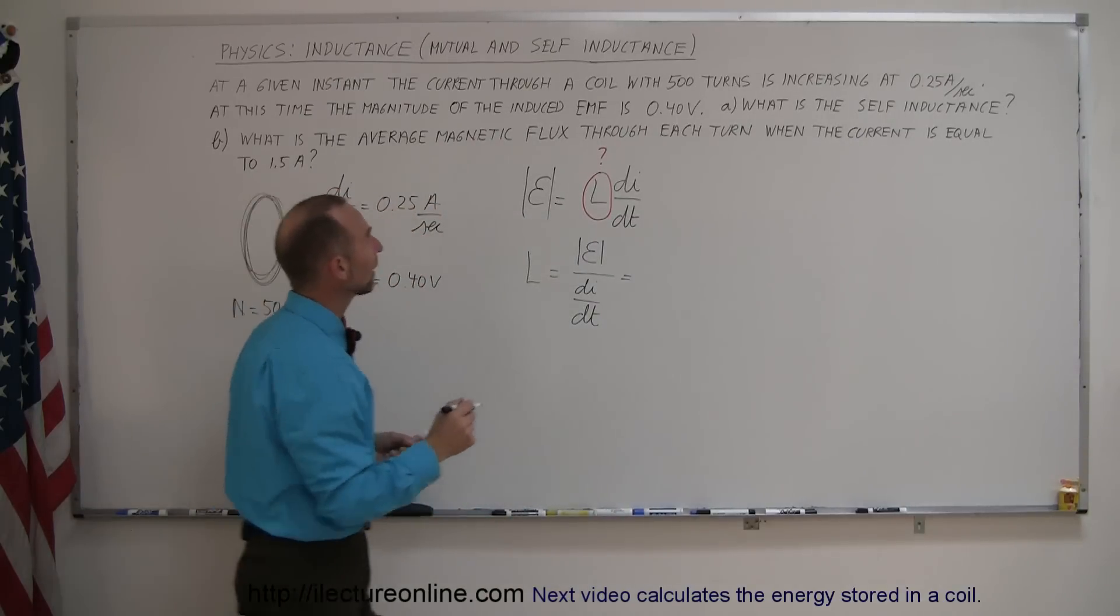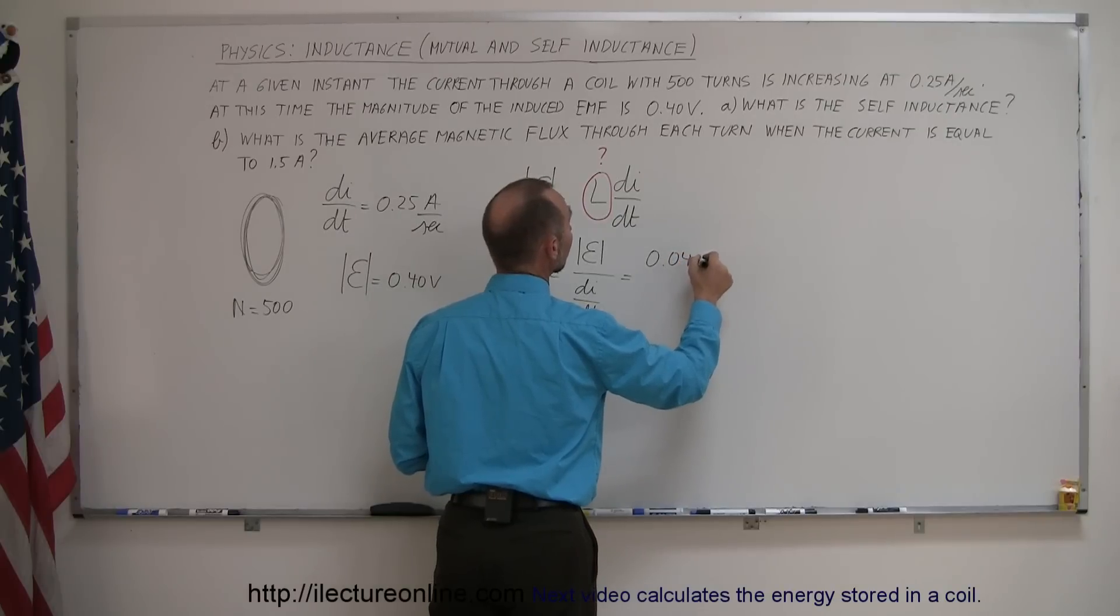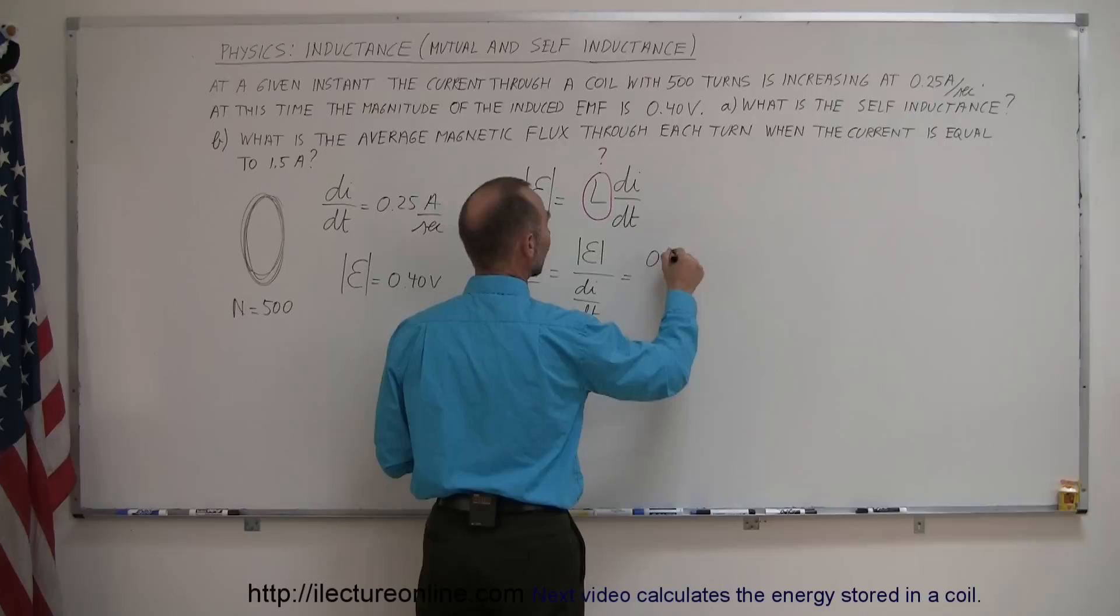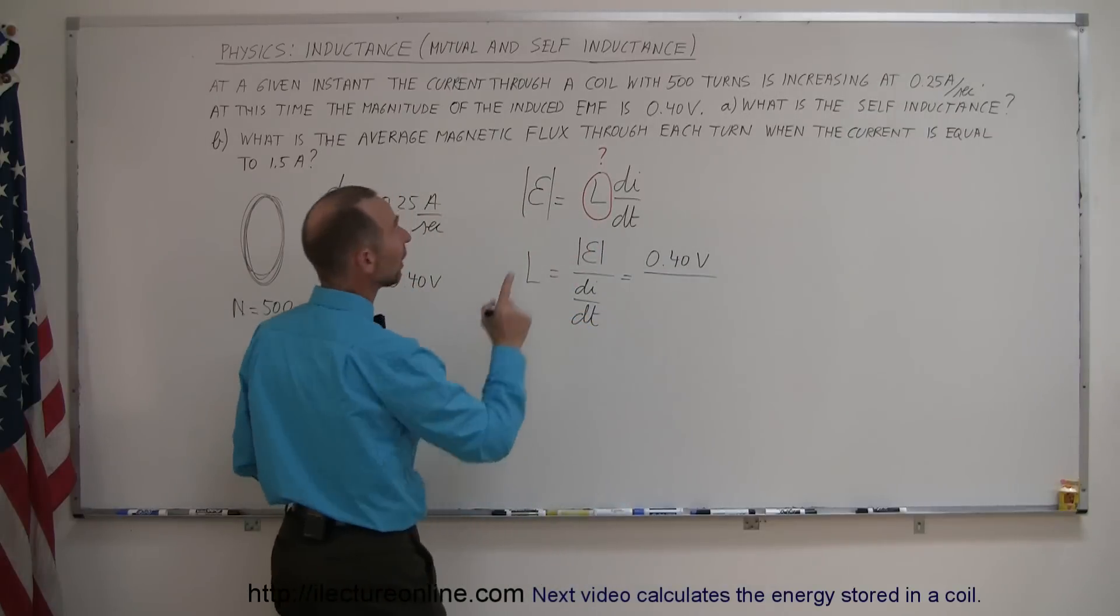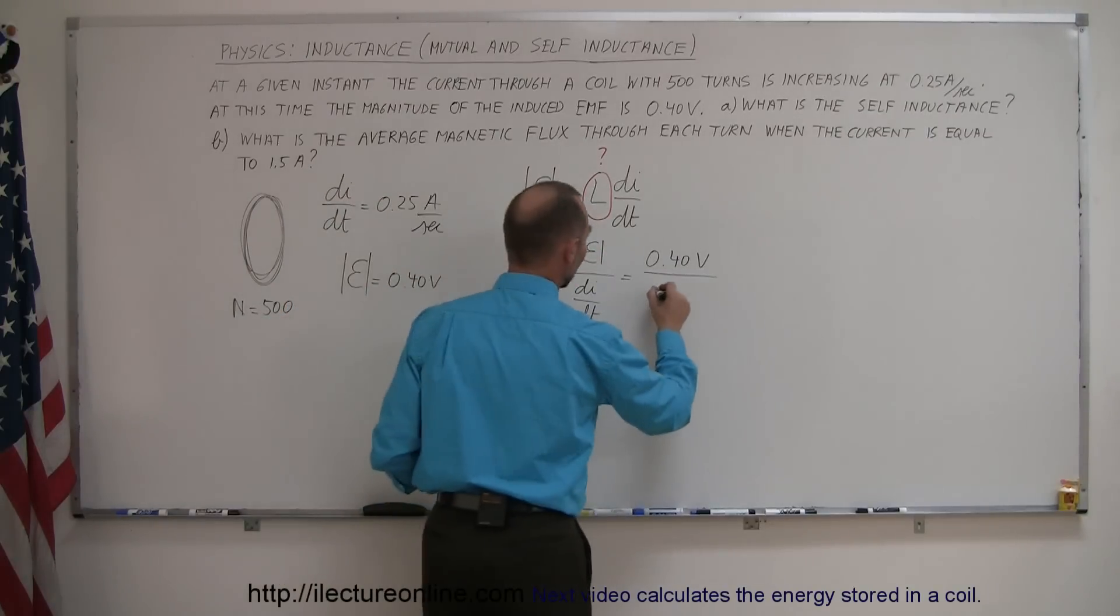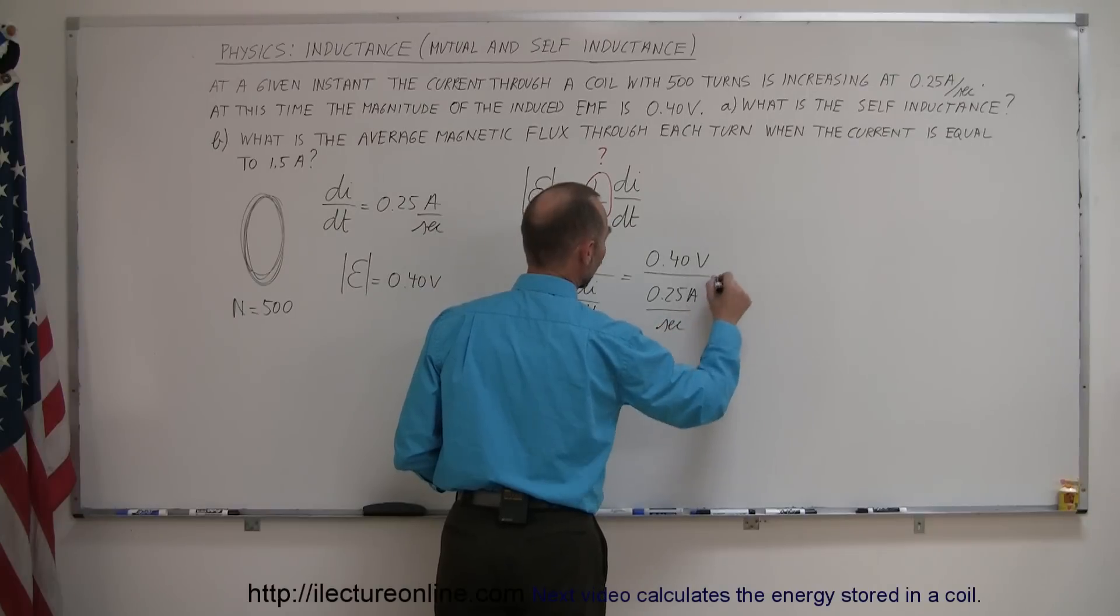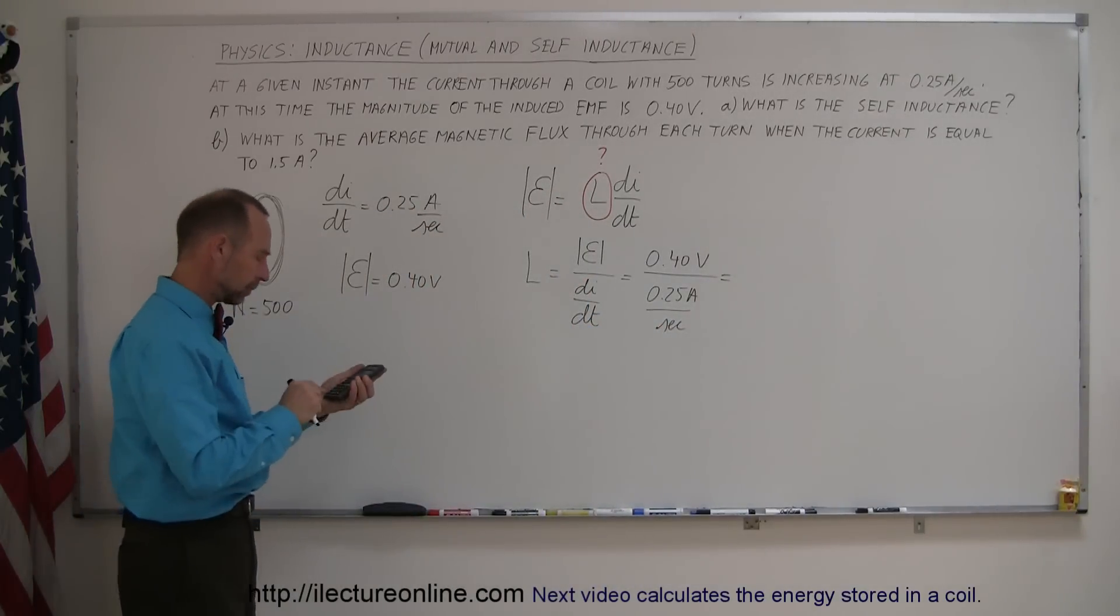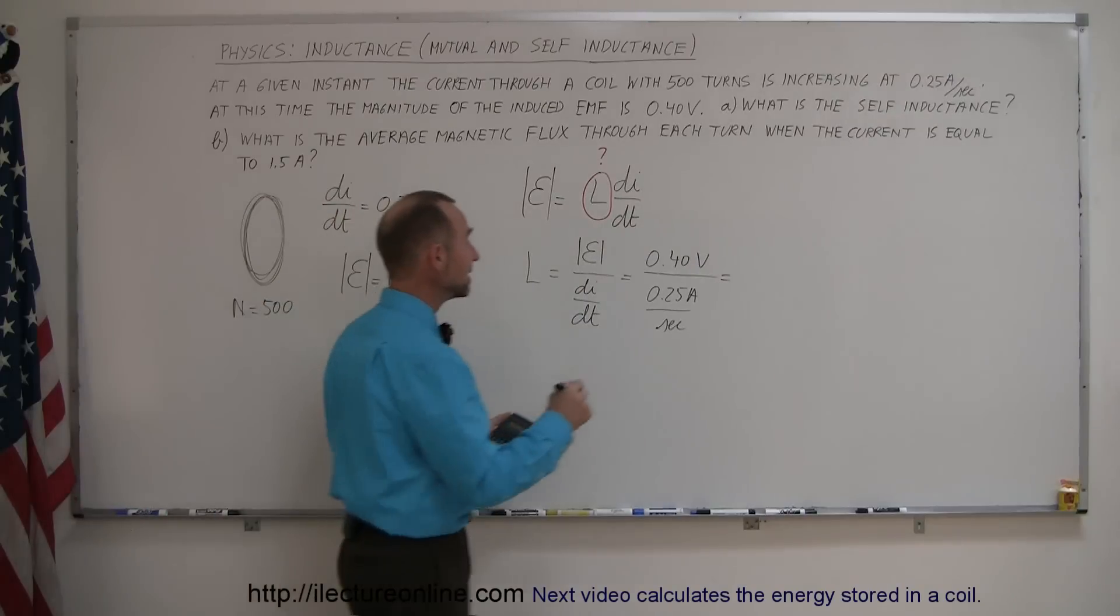And we're given that the EMF is 0.04 volts. Oh, too many zeros there. It's 0.40 volts, 4 tenths of a volt, divided by the change in the current. And that's given to us as 0.25 amps per second. And so let's find the self-inductance of that. So 0.4 divided by 0.25, and that is equal to 16